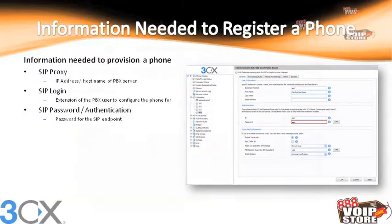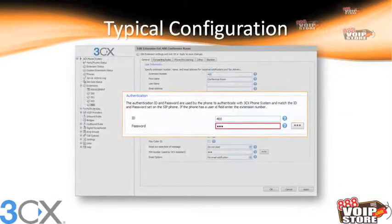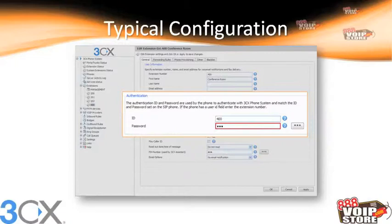In 3CX, when editing an extension, there's a section for authentication — this is the ID and password. Typically the ID is going to be the extension number, though it doesn't have to be. Just keep in mind that if you change it from the extension number, you'll need to remember that when you go to provision the phone. I recommend using a different password than the extension number, which prevents hackers from using those extensions. Use a multi-digit password that doesn't have anything to do with the extension.